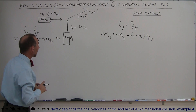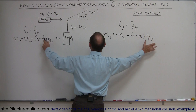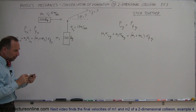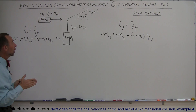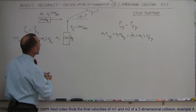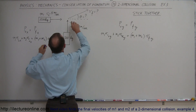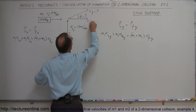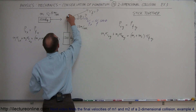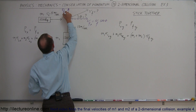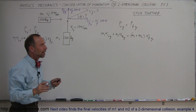The momentum in the y direction is conserved as well: m1·v1_initial_y plus m2·v2_initial_y equals (m1 + m2)·v_final_y. This allows us to find v_final_x and v_final_y, which we can then use to find the total v_final. If this is the final velocity after the collision, then v_final_x equals v_final times cosine(θ), and v_final_y equals v_final times sine(θ).